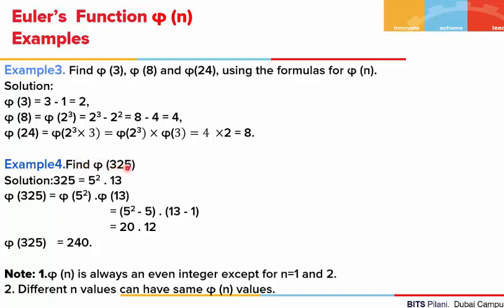If we are asked to find phi(325), the first thing we do is write 325 as a product of prime powers: 325 = 5^2 × 13. Using phi on both sides, phi(325) = phi(5^2) × phi(13). Applying the second formula: phi(5^2) = 5^2 − 5 = 20, and phi(13) = 12. So the answer is 240.